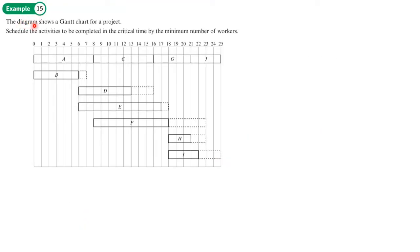Example 15: the diagram shows a Gantt chart for a project. Schedule the activities to be completed in the critical time by the minimum number of workers. To find out a lower bound for the minimum number of workers, I need to work out the total time of the activities divided by the critical time. I can see the critical time is 25.